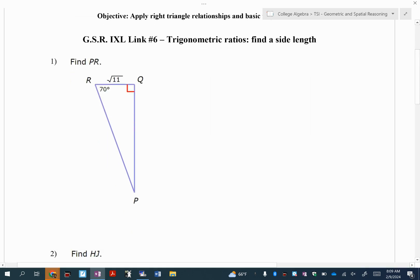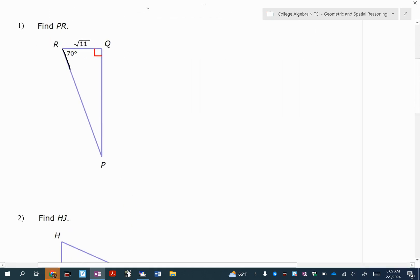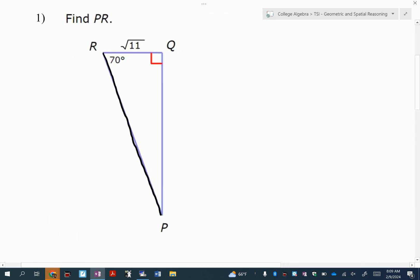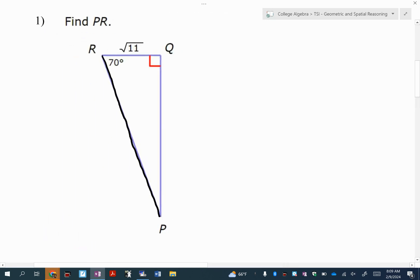So let's try to find PR. How would you describe the side length PR in this triangle? One of our three words we've been using for the side lengths - it's either opposite, adjacent, or hypotenuse. And which one is it? The hypotenuse, because it's across from the right angle.